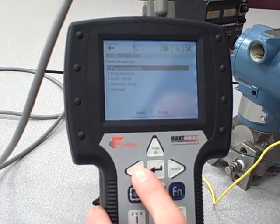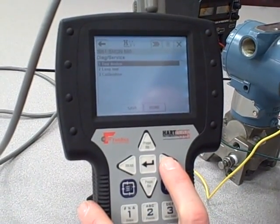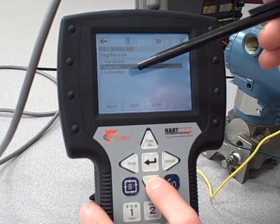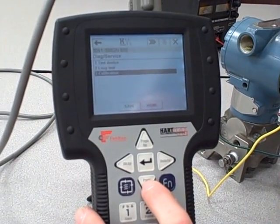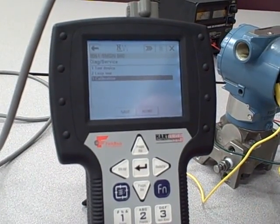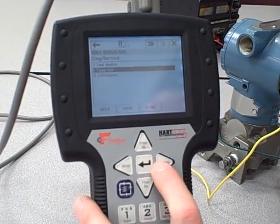I can go back, go into my next menu, Diagnostic Service. Here I can perform various self-tests. I can test the loop, and I can also go into calibration and do trim adjustments for both the sensor and the D to A converter for the 4 to 20 milliamp output. The loop test is something that bears some exploration, so I'll step into that.